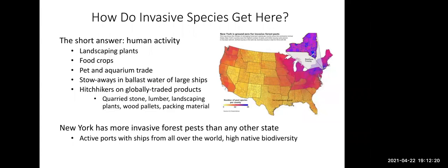How do invasive species get here? The short answer is human activity. About 56 percent of terrestrial invasive plants came courtesy of the landscaping industry, which generally likes plants with very hardy root systems that don't suffer from pests or diseases and have profuse flowers or fruits — meaning lots of seeds. A few came as food crops; garlic mustard was brought by early colonists as an early spring crop. The pet and aquarium trade is responsible for many aquatic invasives, because people tend to dump their aquariums into natural waterways — that's how hydrilla became widespread in North America.